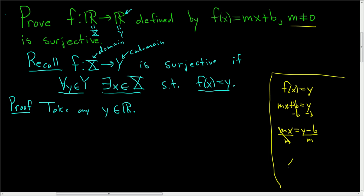There it is. That was the whole reason for having m not equal to zero. That's going to be our value of x, which is (y - b)/m. Now we'll go back to the proof.